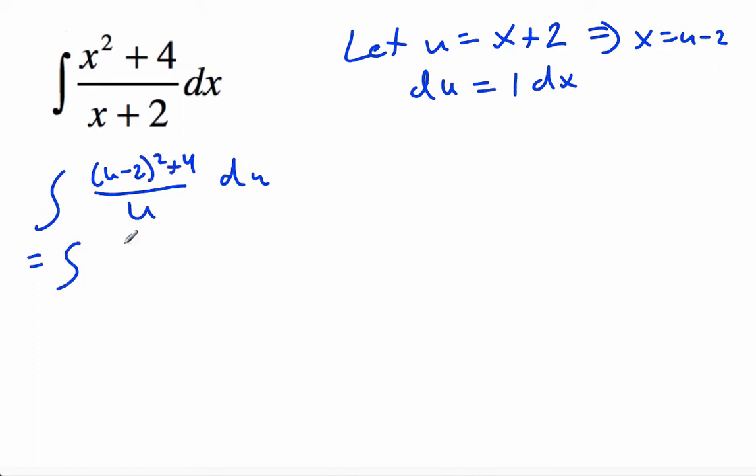And then we'll simplify that. So u minus 2 all squared is u squared minus 4u plus 4, and then plus this 4 over u du, and we get an integral of u squared minus 4u plus 8 over u du.